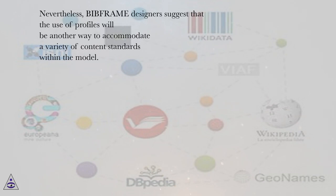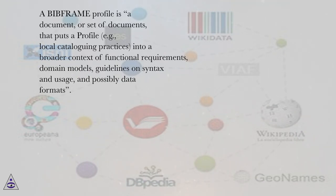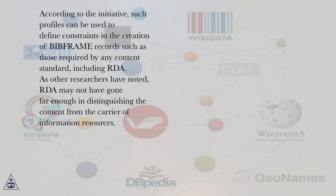Nevertheless, BIBFRAME designers suggest that the use of profiles will be another way to accommodate a variety of content standards within the model. A BIBFRAME profile is a document, or set of documents, that puts a profile — for example, local cataloging practices — into a broader context of functional requirements, domain models, guidelines on syntax and usage, and possibly data formats. According to the initiative, such profiles can be used to define constraints in the creation of BIBFRAME records such as those required by any content standard, including RDA.